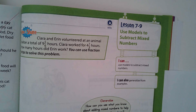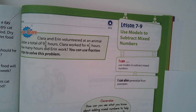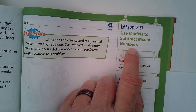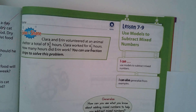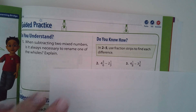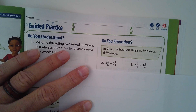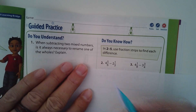This should be a relatively short recording because I'm not going to have you guys do a lot of the problems in 7.9. They're asking you to use models to subtract mixed numbers, and the models can be pretty cumbersome. I do want to just do one problem here — I'm on page 303, number two — and it says use fraction strips to find the difference, so we're talking about subtracting.